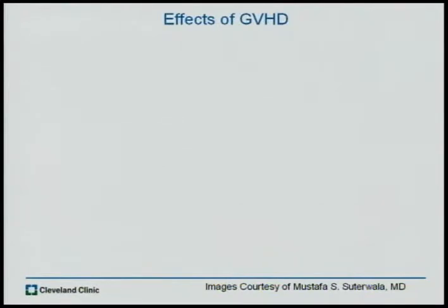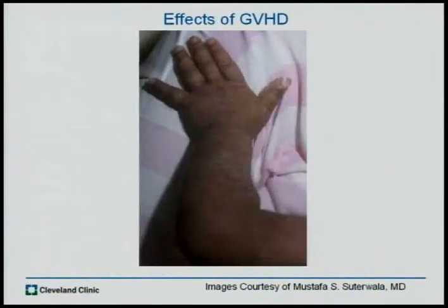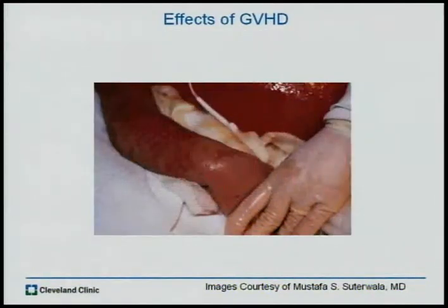What exactly is graft-versus-host disease? When a person has a bone marrow transplant that is a mismatch at even one allele, you start to develop a sort of response. In a mild response, the skin starts to discolor and the melanin in the skin starts to be destroyed. However, in more severe cases, everything starts to bleed — internal organs, blood vessels, skin. This is what we're trying to avoid by sequencing the HLA.